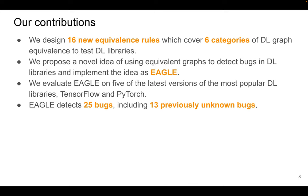Here are our contributions. We design 16 new equivalence rules which cover six categories of deep learning graph equivalence to test deep learning libraries. We propose a novel idea of using equivalent graphs to detect bugs in deep learning libraries and implement the idea as EGLE. We evaluate EGLE on five of the latest versions of the most popular deep learning libraries, TensorFlow and PyTorch. EGLE detects 25 bugs, including 13 previously unknown bugs.